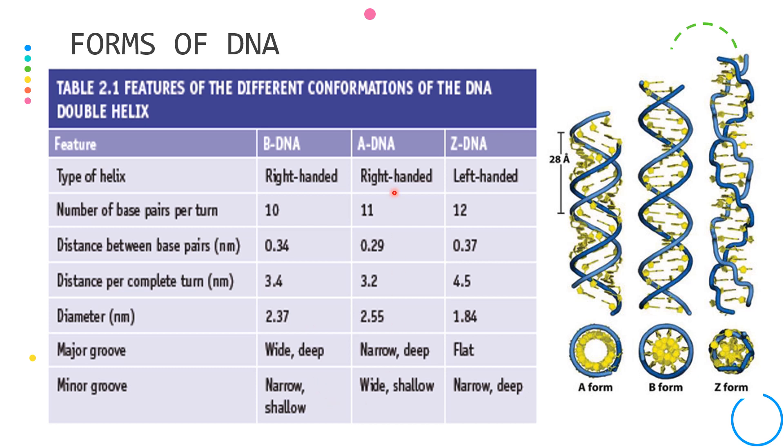The second type of DNA is the A form. This is more compact compared to the B form with 11 base pairs per turn, 0.29 nanometers between each two base pairs, and a diameter of 2.55.